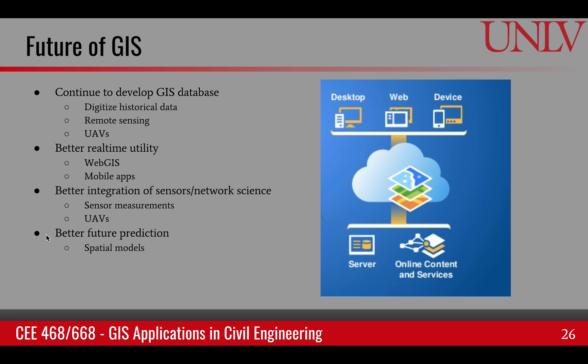At the core of the methods, we have spatial models that help us predict the future. There is going to be a lot of integration of existing GIS with other spatial models — for example, improvement of our hydrological modeling and geological modeling — that helps us convert data into information so we can take meaningful actions.